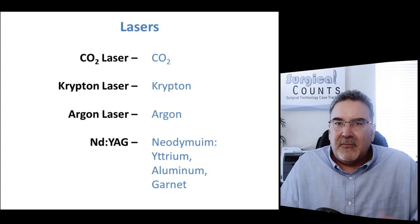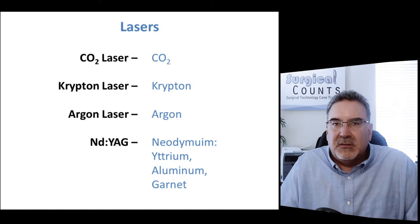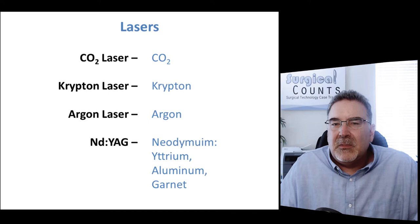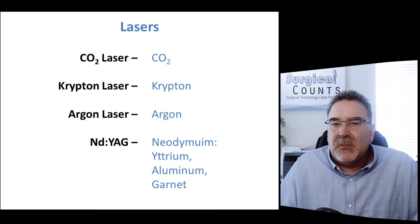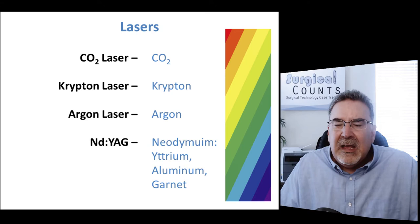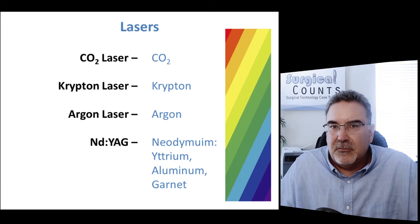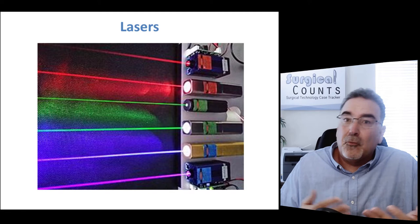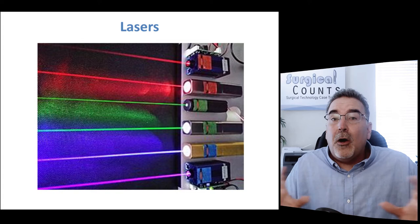Can't we just use one laser for everything? No, because different materials create different colors of light. The CO2 laser creates one color, krypton creates another, argon a different color, and the ND-YAG laser yet another. Those colors are important for what procedure we'll use that laser for. Lasers come in all different colors — we usually think of red, but depending on the material inside, you can get reds, greens, blues, and violets.